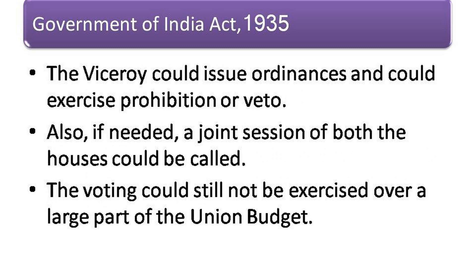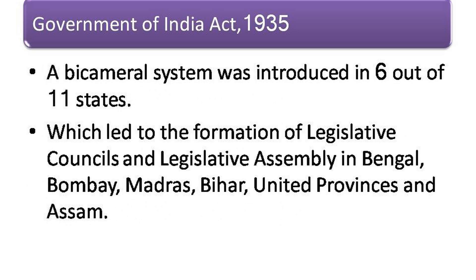The viceroy could issue ordinances and could exercise prohibition or veto. Also, if needed, a joint session of both the houses could be called. The voting could still not be exercised over a large part of the union budget.